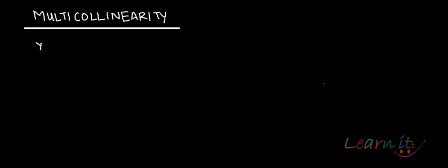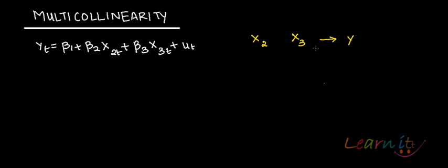So say for example you have the model yt equals beta1 plus beta2x2t plus beta3x3t plus ut. Suppose you have this model and how many independent variables do you have? You have x2t and x3t as two independent variables. So there are two independent variables x2 and x3 affecting y, which is your dependent variable.